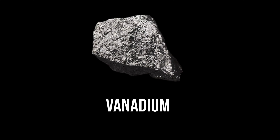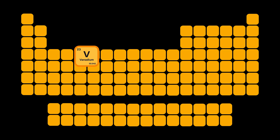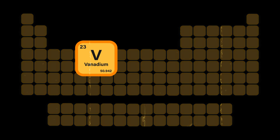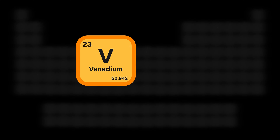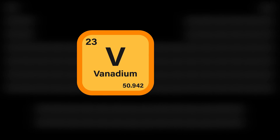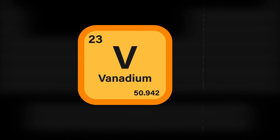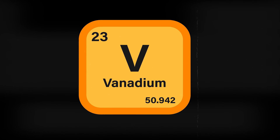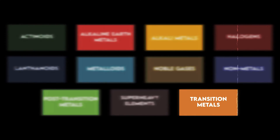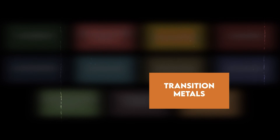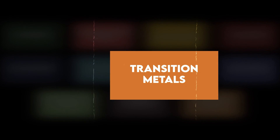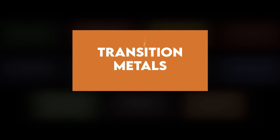This is vanadium. Vanadium is a chemical element with the symbol V and atomic number 23. It is a hard, silvery-gray, malleable transition metal.